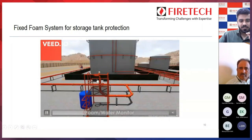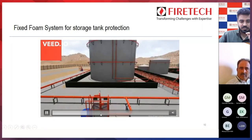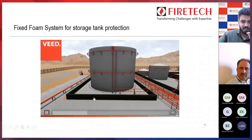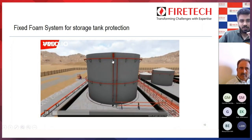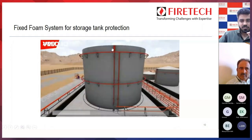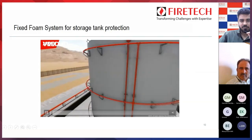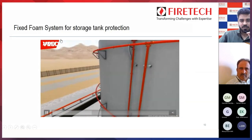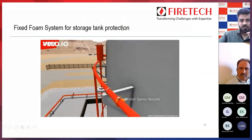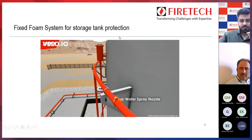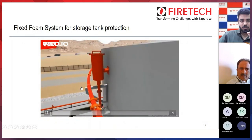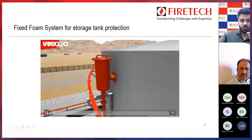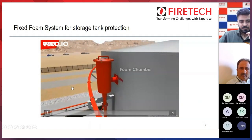This is a foam water monitor which has been used for the secondary protection of your storage tanks. This is your foam chamber — this is a cone roof tank, so a foam chamber has been used here. This is a water spray system along the periphery which is used for tank cooling.